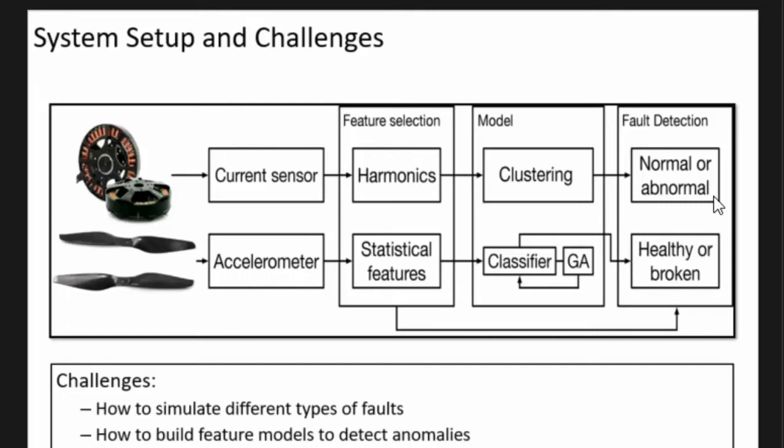For the propeller, it's much easier. We can just use a scissor to cut part of them or change the balance of the propeller to simulate the failure situation. For that case we developed statistical features and used classical supervised learning with optimization algorithms to determine which statistics can represent this damage, because we know the abnormal case and the normal case.